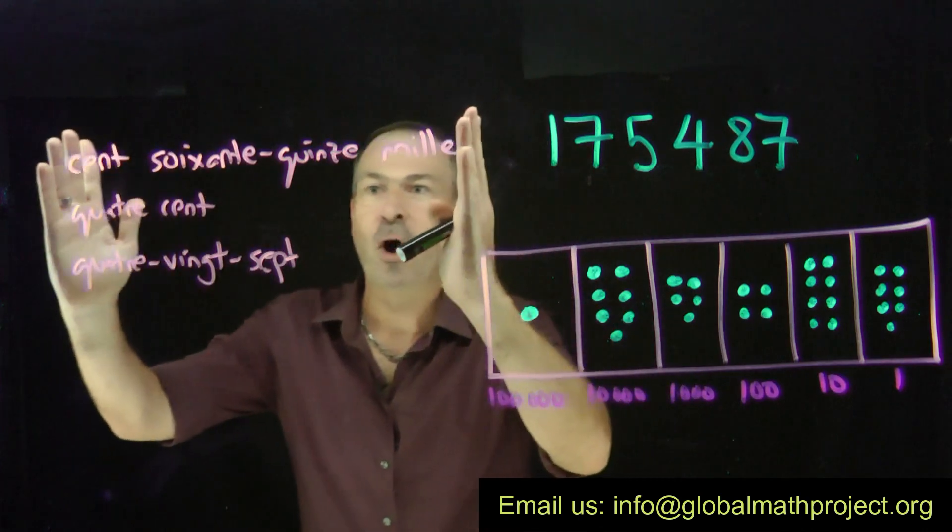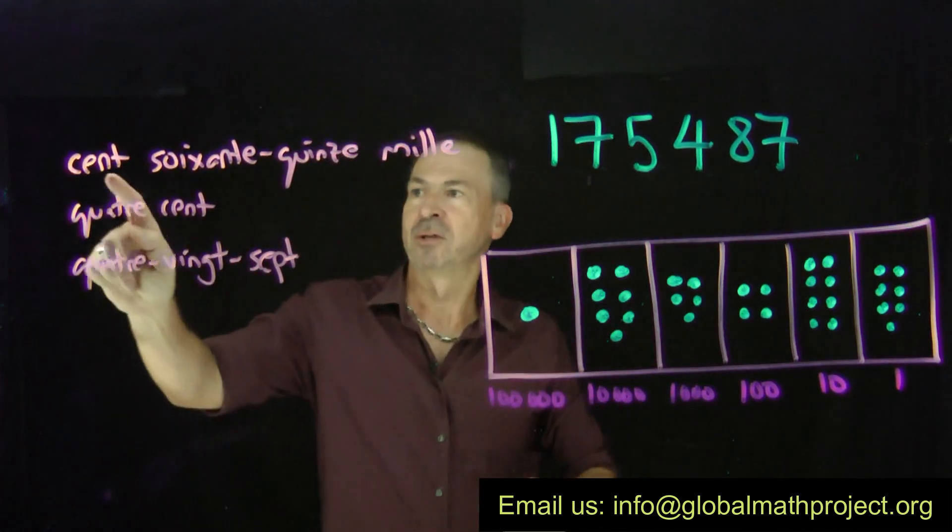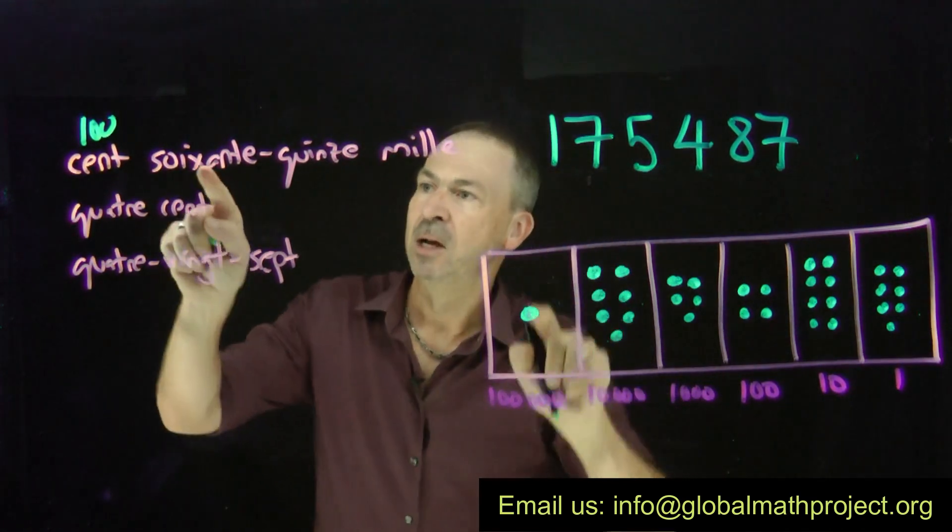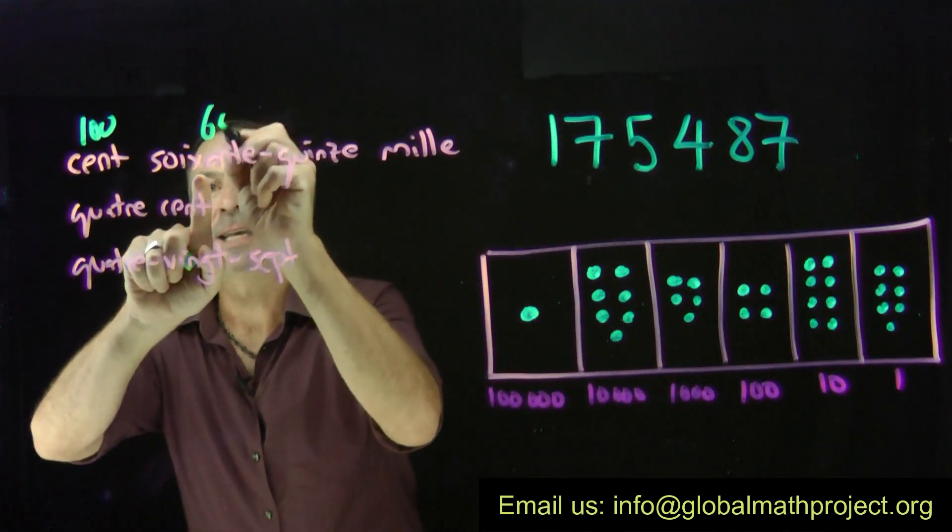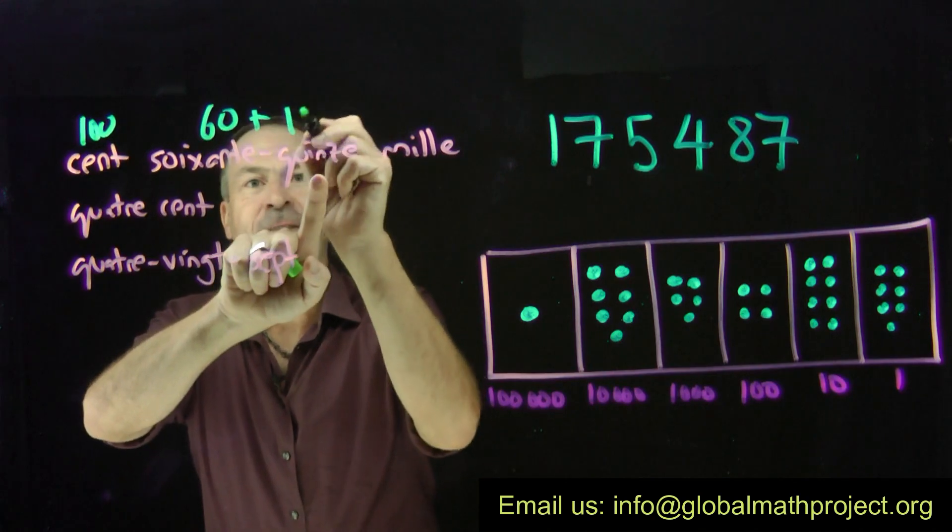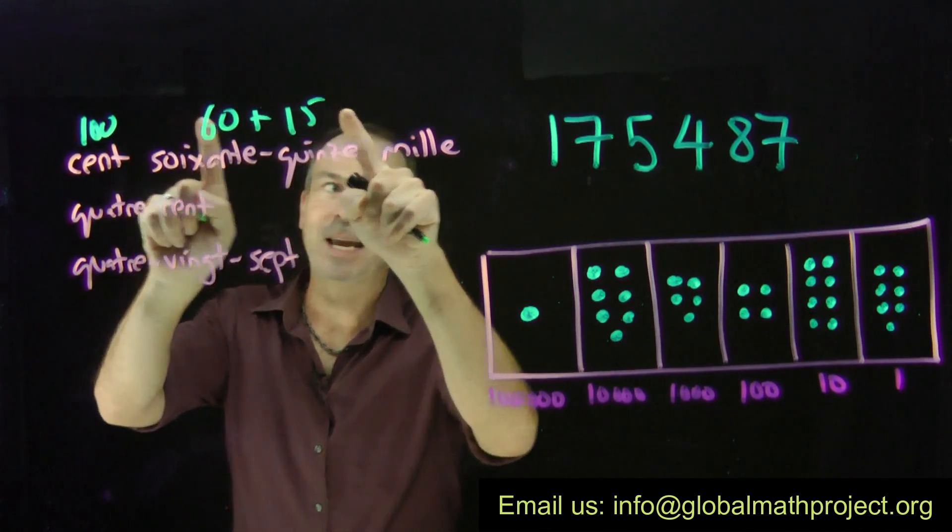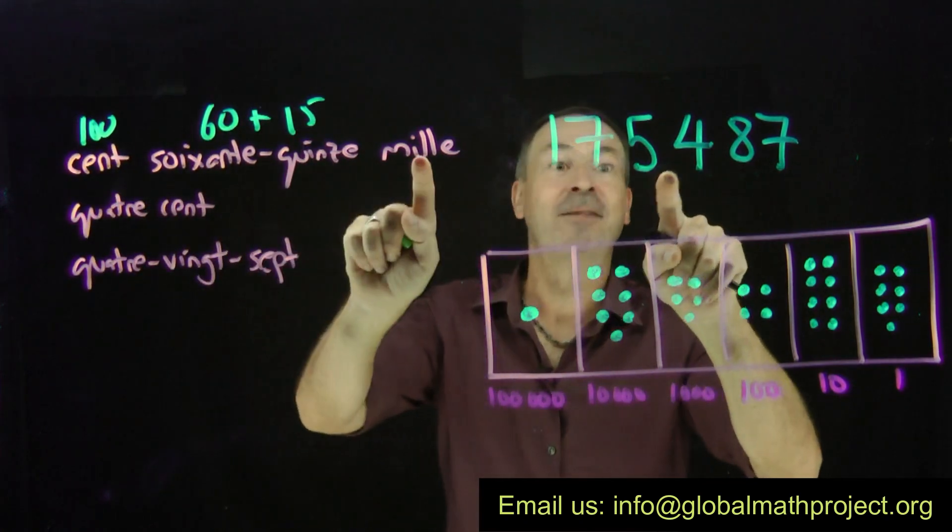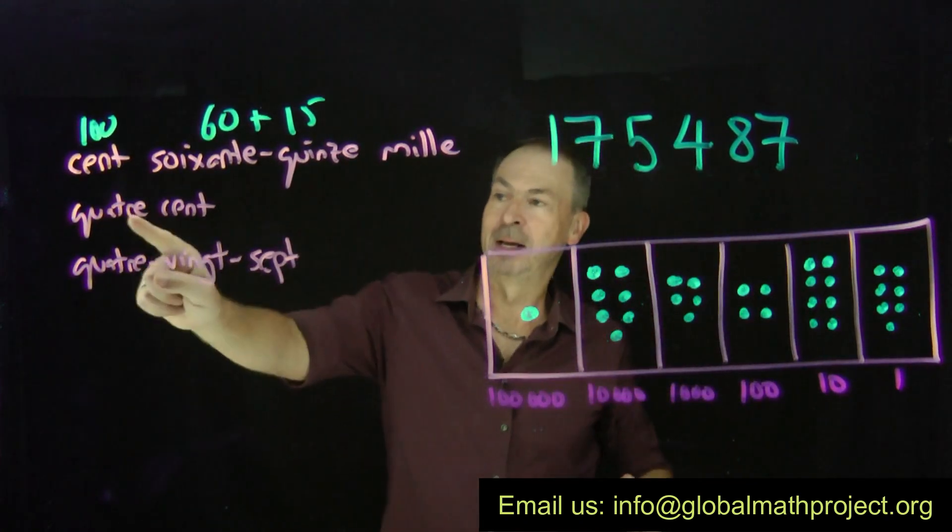All right, but okay, so let's translate this word for word from the French to English. So that's actually 100. 100, there it is, 100. Soixante and quinze. Soixante is actually 60 and this is actually 15. 60 and 15 makes 75. 175,000. There we go.